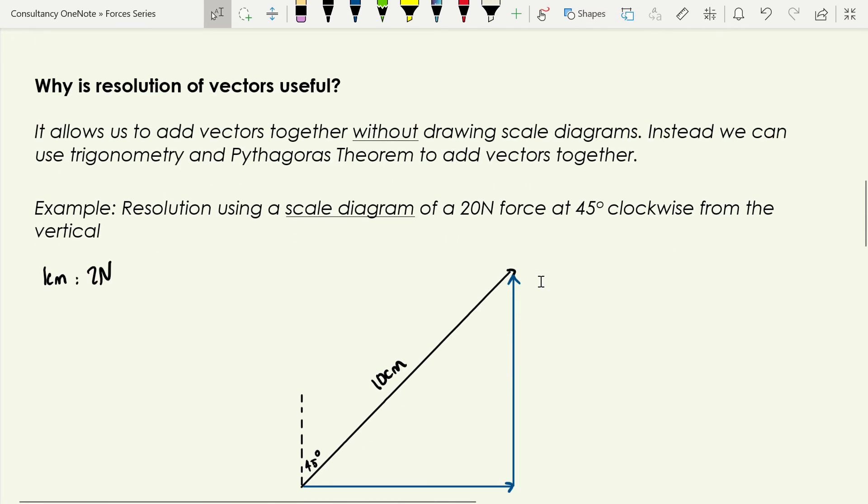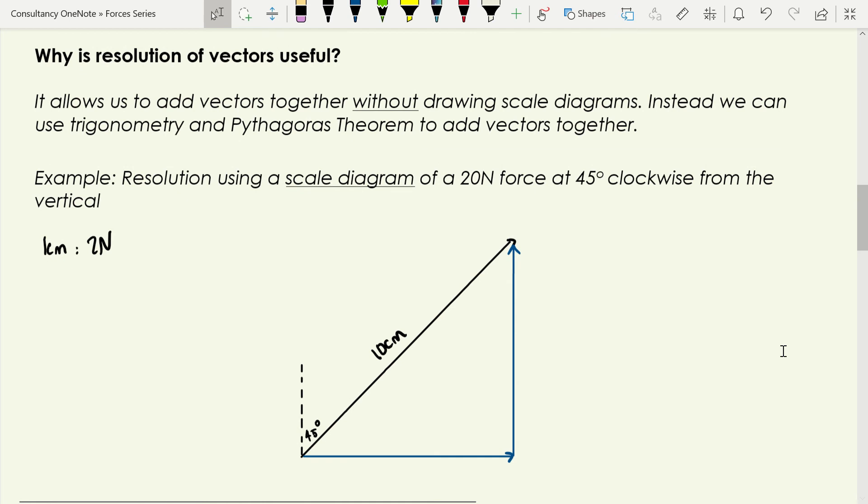So let's talk about why we might want to do this. The most common reason we resolve vectors is to allow us to add them without having to draw scale diagrams. Because scale diagrams are very good at giving us a rough idea at what the resultant of two vectors is, but what if we want to calculate it precisely or do it without drawing diagrams. So it essentially unlocks the ability to use trigonometry and Pythagoras theorem to add vectors together. There are a few other contexts in which we use it, like in things like projectile motion and conservation and all that kind of thing, but we'll get to those later on.